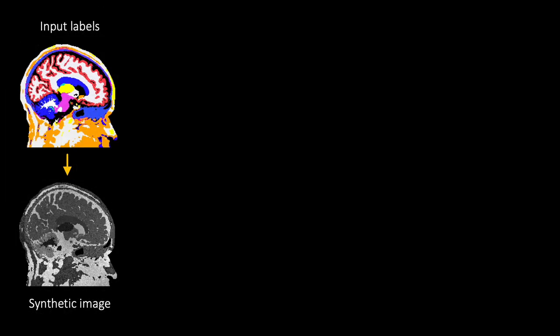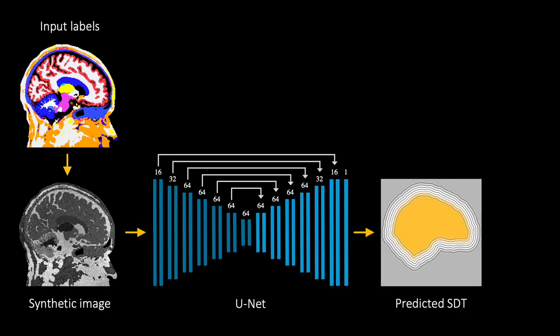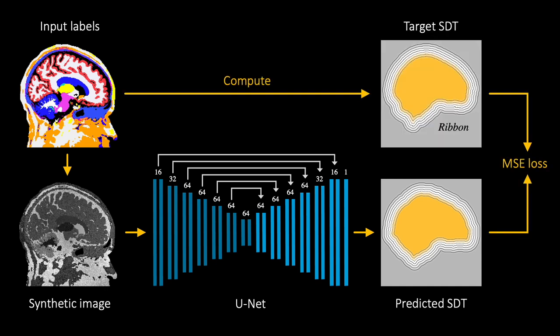Using this synthesis strategy, we optimize a 3D UNet that estimates, for a given input image, a corresponding signed distance transform defining the distance to the skull boundary. At evaluation time, we can easily extract voxels within a given distance from the brain.